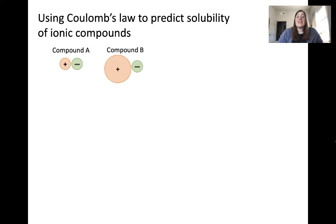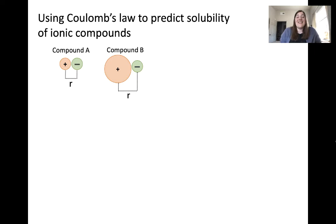Let's look at two sets of examples to understand the reasoning behind this behavior. Compounds A and B are generic ionic compounds. Both contain a cation with a +1 charge and an anion with a −1 charge. The difference is that the cation in compound B is much larger than in compound A, meaning the distance between the ions in B is much greater. I would predict that the ions in compound A are more attracted to each other because they're closer together.